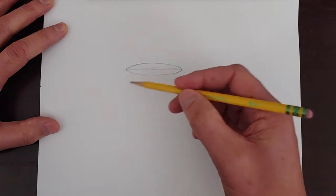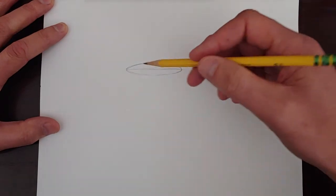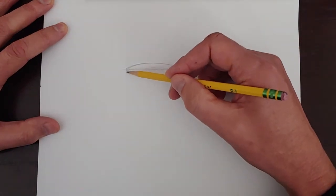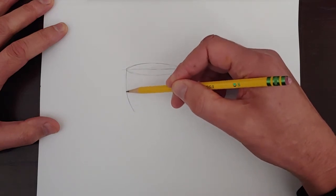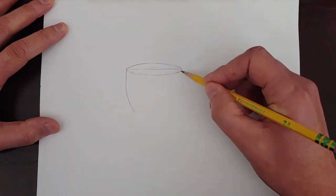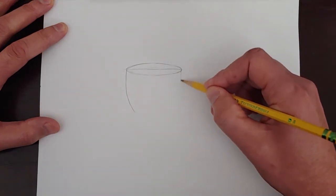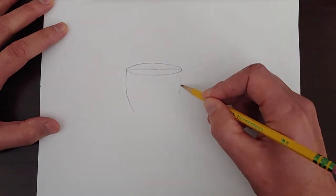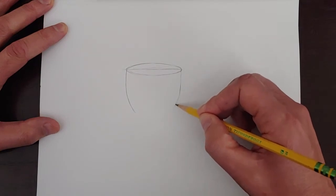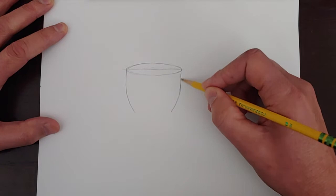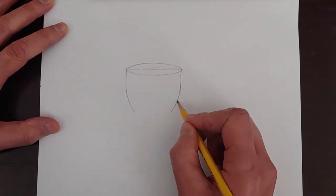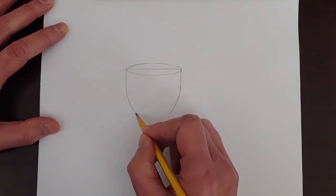Now, we've got to make the sides of the cup. The difficulty in this is making them, again, symmetrical. So, when I come down, this side, the curve, the angle, needs to be identical. So, we'll come down this side. Come down this side here, too.